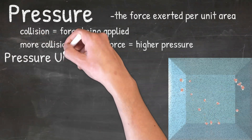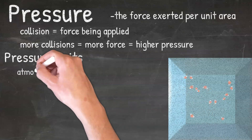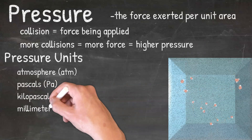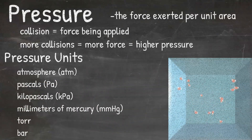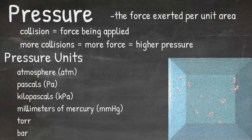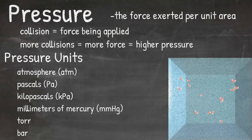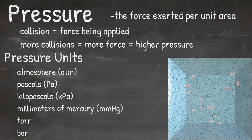We can measure pressure in different units. Some of the units you'll see are atmospheres, abbreviated ATM; pascals, abbreviated PA; kilopascals, abbreviated KPA; and millimeters of mercury, abbreviated mmHg. We also use Torr and bar for pressure in other scenarios. All of these units are used for slightly different reasons and with slightly different scenarios in chemistry. The important thing to know is that they all represent units for pressure, which will help you know what variable to use in the equation.